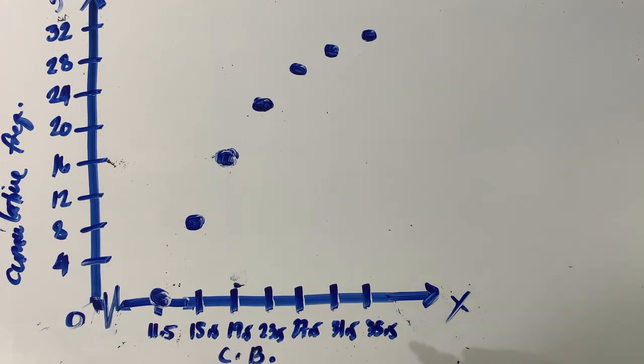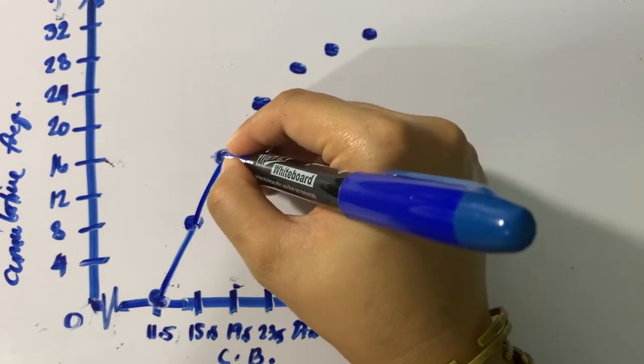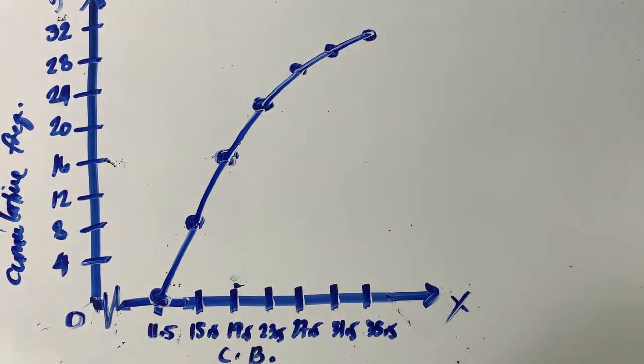We will need to connect these points with a line. This is how we construct an ogive. I hope this is clear.